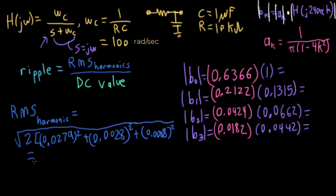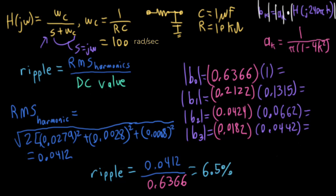And this all winds up giving us a number of 0.0412. So in this case, my ripple winds up being 0.0412 over my DC value, which is still 0.6366. So that winds up being 6.5%, which is much better than the 48% that we had without any filtering at all.